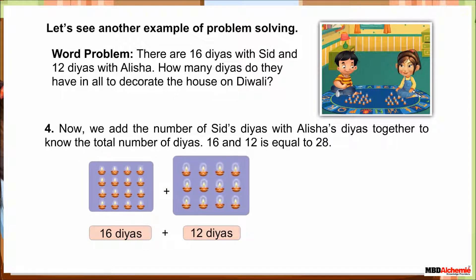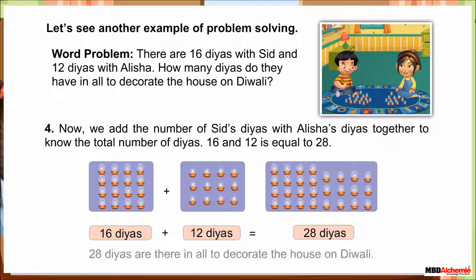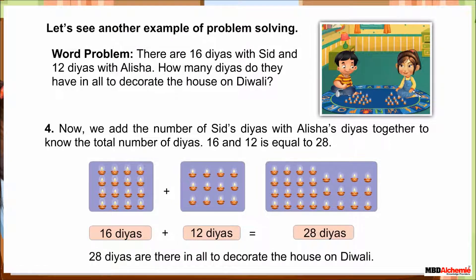Step four: now we add the number of diyas. 16 and 12 equals 28. There are 28 diyas in all to decorate the house on Diwali.